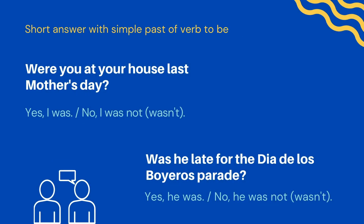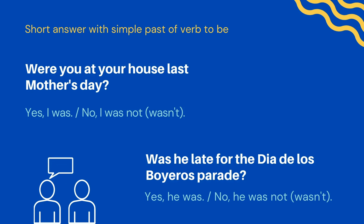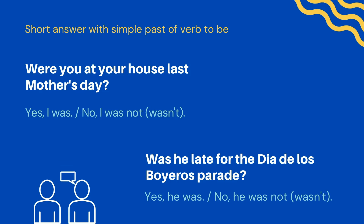These are examples of short answers with the simple past of the verb to be. Were you at your house last Mother's Day? Yes, I was. No, I was not. Or the contracted form, no, I wasn't.